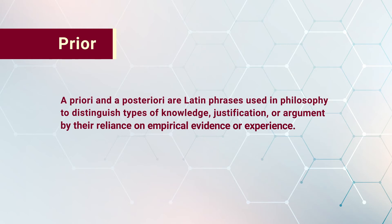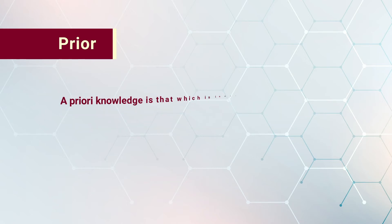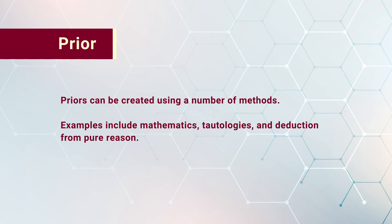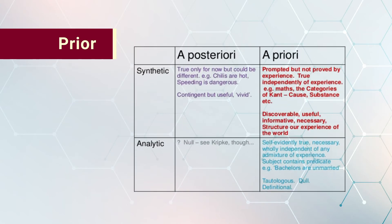A priori and a posteriori are Latin phrases used in philosophy to distinguish types of knowledge, justification, or argument by their reliance on empirical evidence or experience. A priori knowledge is that which is independent of experience. In Bayesian statistical inference, a priori probability distribution — often simply called the prior — of an uncertain quantity is the probability distribution expressing one's belief about the quantity before some evidence is taken into account. Priors can be created using mathematics, tautologies, and deductions from pure reason.